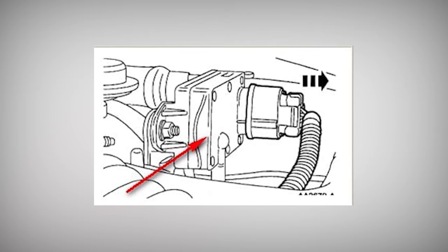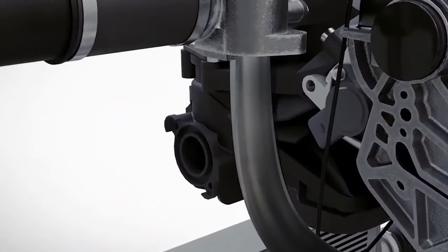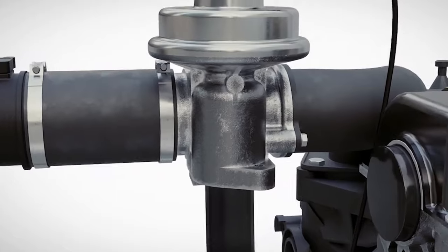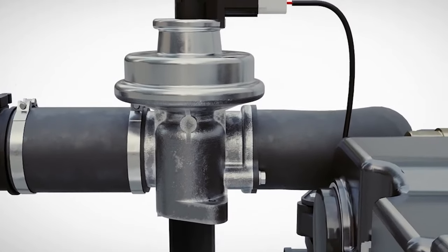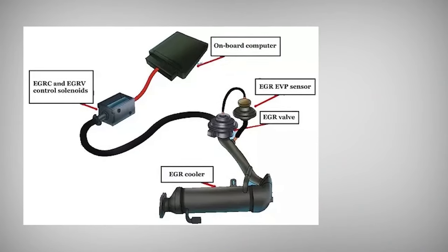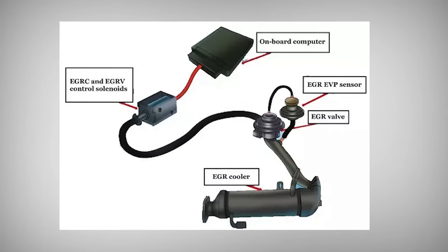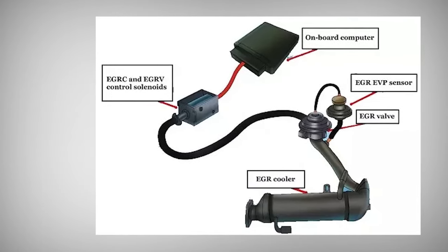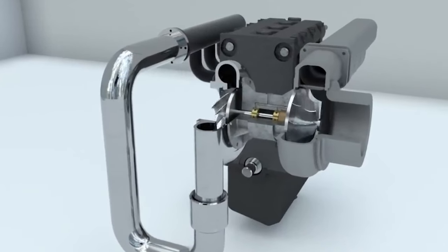The electronic control unit can receive information about the valve's position from a feedback sensor built into some valves. The majority of digital EGR valves will have a feedback sensor and either a solenoid or a stepper motor. The ECU provides a pulse width modulated signal to these valves to regulate the exhaust gas flow.